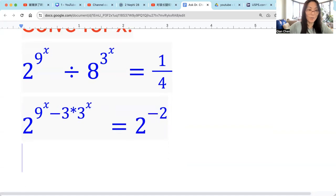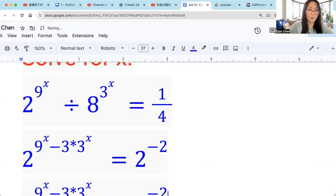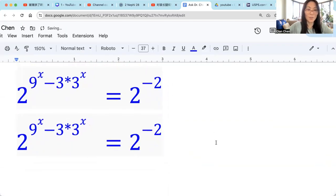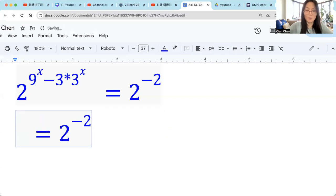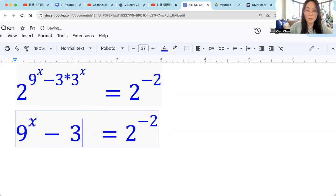So that means we can ignore the base. We have equations. The bases are the same. That forces the exponent to be the same. So we can forget about this base, right? So we have 9 raised by x minus 3 times 3 raised by x equals to negative 2.